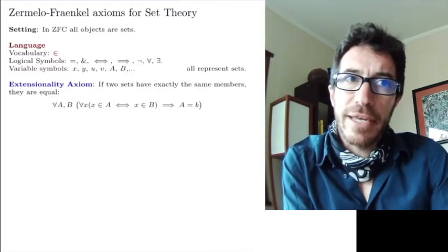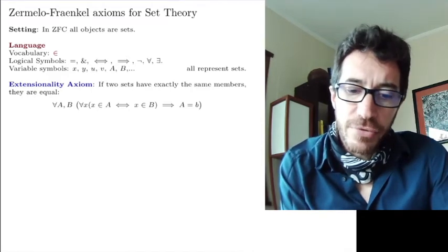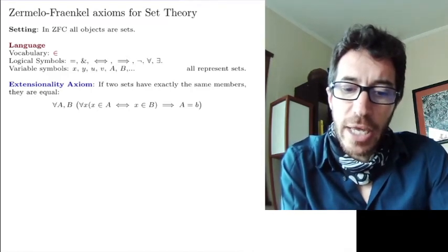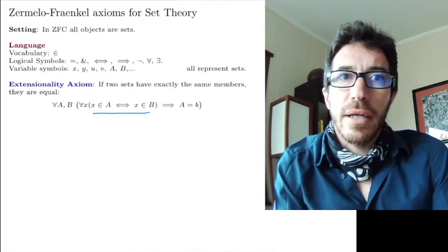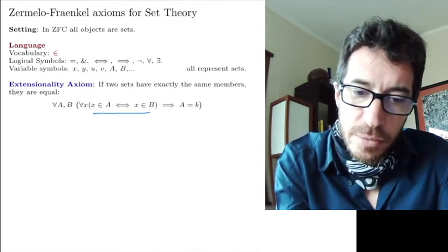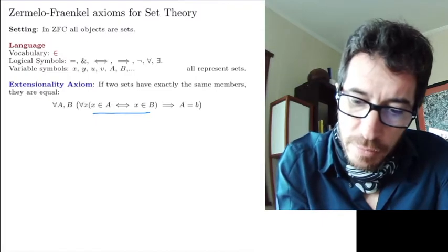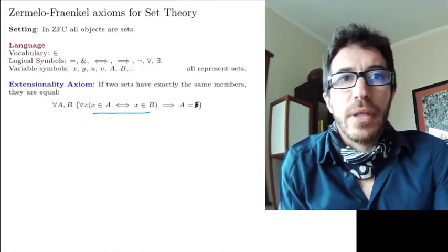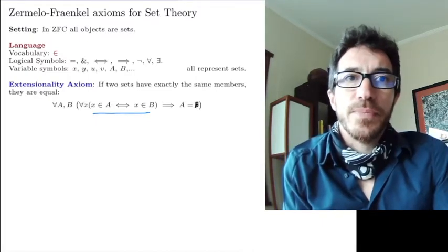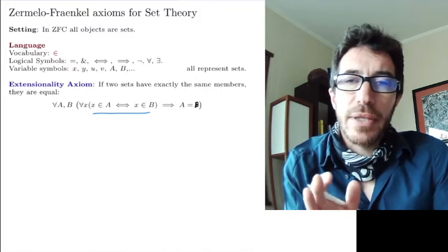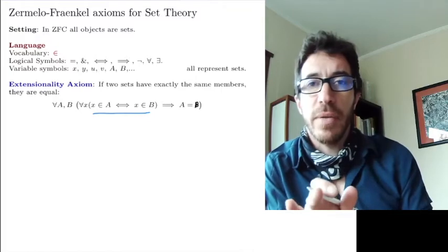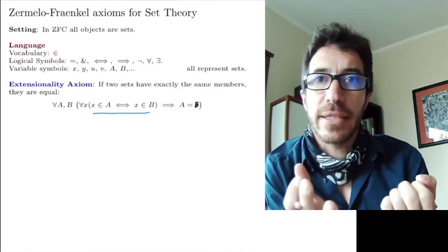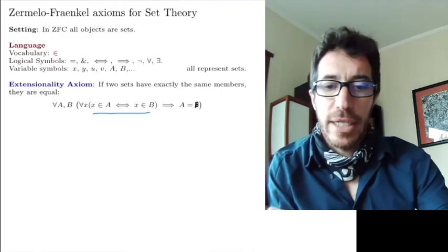The way you write the formula, it says for every a and b, so given two sets a and b, you know that if for every x, x belongs to a if and only if x belongs to b, then a is equal to b. Alright? So two sets a and b, if for every x, x belongs to one if and only if it belongs to the other one, that means exactly the same x's belong to both, then they are equal.